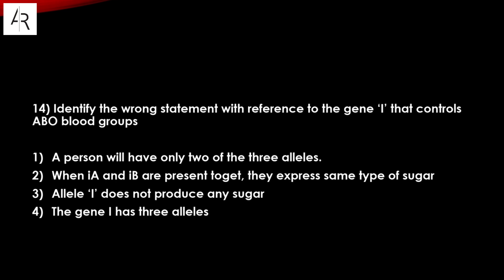Question number fourteen: identify the wrong statement about the gene I that controls the ABO blood group. 'A person will have only two of the three alleles' is correct — in the population there are three alleles but in one person there are two. 'When IA and IB are present together they express the same type of sugar' is wrong — option number two is the answer.